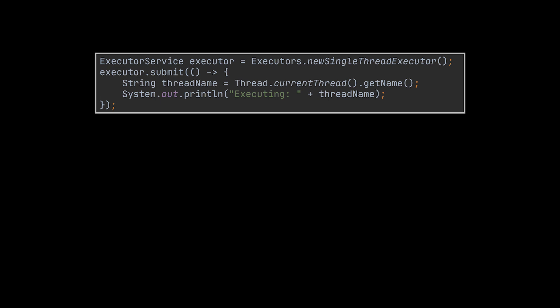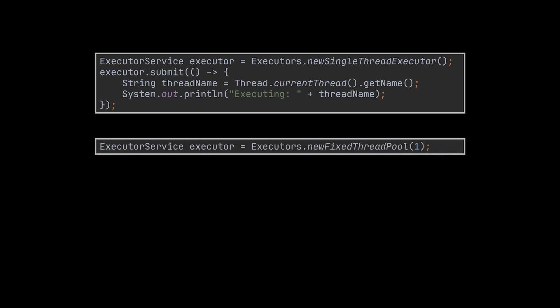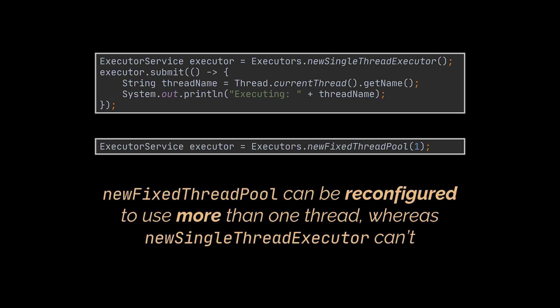In this example we used an executor with a thread pool of size 1. To do that we invoked the newSingleThreadExecutor method, but you can use the newFixedThreadPool method as well and pass one as a parameter to reach the same result. The difference between these two is that newFixedThreadPool can be reconfigured to use more than one thread, whereas the other one cannot.